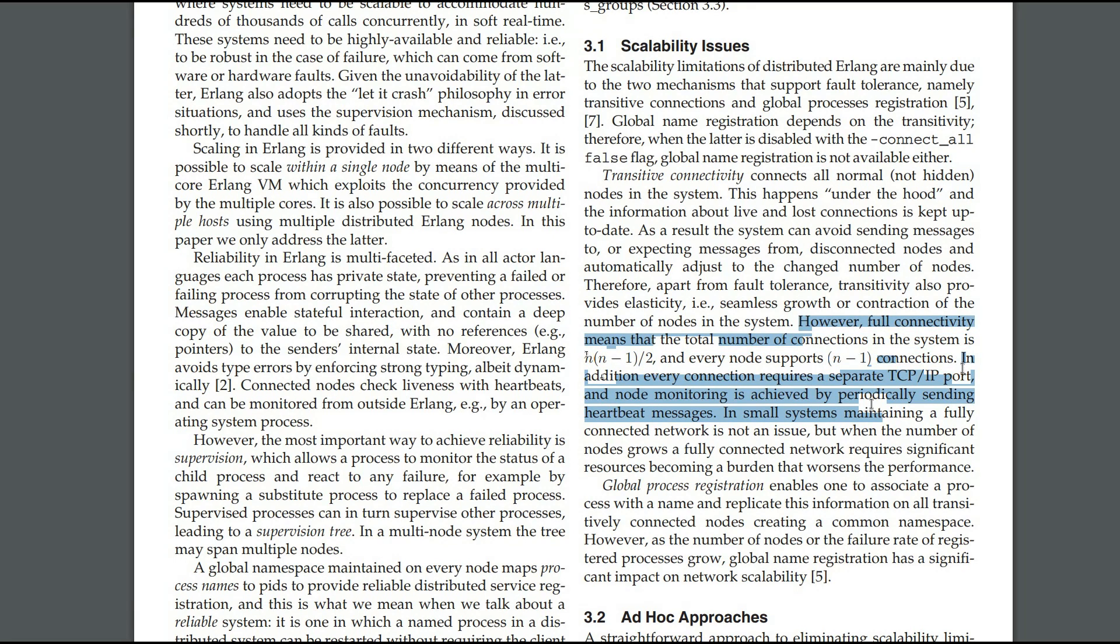So as they point out, full connectivity means the total number of connections in the system is N times N minus one over two. Fair enough. And every node supports N minus one connections. In addition, every connected node requires a separate TCP IP port and node monitoring is achieved by periodically sending heartbeat messages. In small systems, maintaining a fully connected network is not an issue. But when the number of nodes grows, a fully connected network requires significant resources becoming a burden that worsens the performance. So if you're running a 50 node, 100 node cluster, this is probably not going to reach out and bite you.